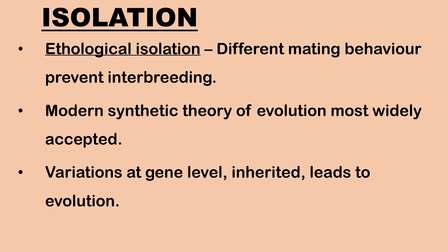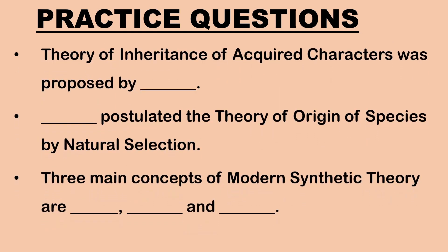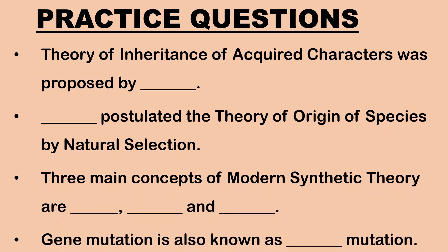Variations that occur at the gene level can only be inherited by future generations, and this leads to evolution. So today we have learnt in detail about the Theory of Inheritance of Acquired Characters proposed by Lamarck, Darwin's Theory of Natural Selection, and the Modern Synthetic Theory of Evolution. I have some practice questions for you — please share your answers in the comment section below.